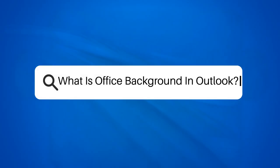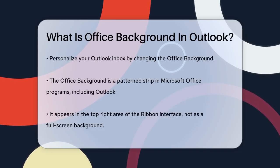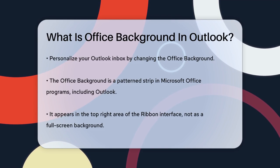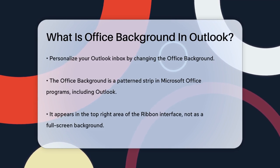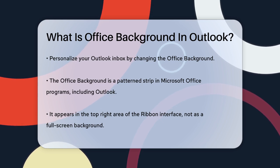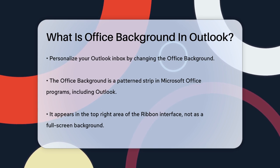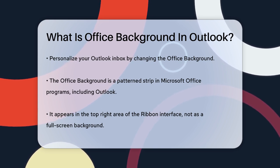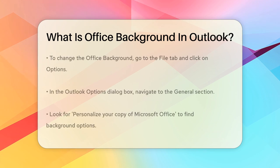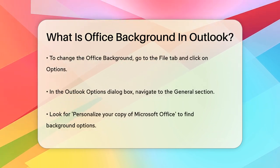What is Office Background in Outlook? Have you ever wondered how you can personalize the look of your Outlook Inbox? One way to do this is by changing the Office Background. The Office Background is essentially a patterned strip that you can apply to the interface of your Microsoft Office programs, including Outlook. It's not a full screen background, but rather a small design element that appears on the top right area of the ribbon interface.